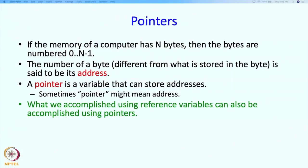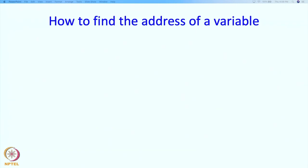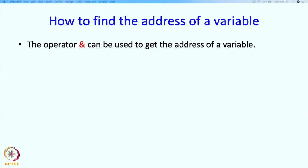What we accomplished using reference variables can also be accomplished using pointers — that is the motivation for studying pointers right now. Pointers will also be useful elsewhere, and we will study that later. Pointers are variables to store the address of a variable. But first, let us see how we get to the address of a variable. The operator & can be used to get the address of a variable.